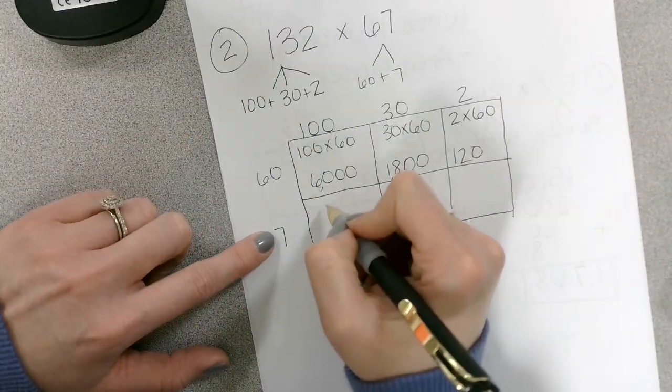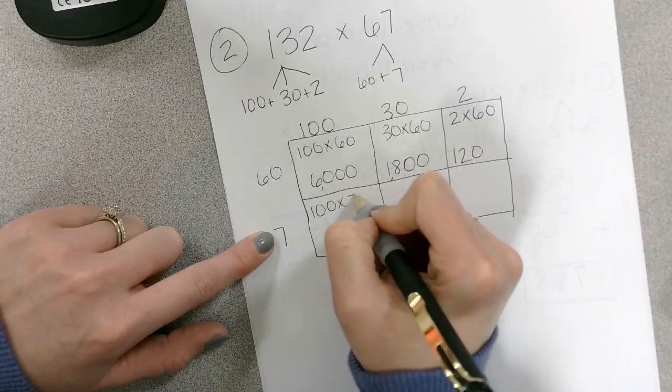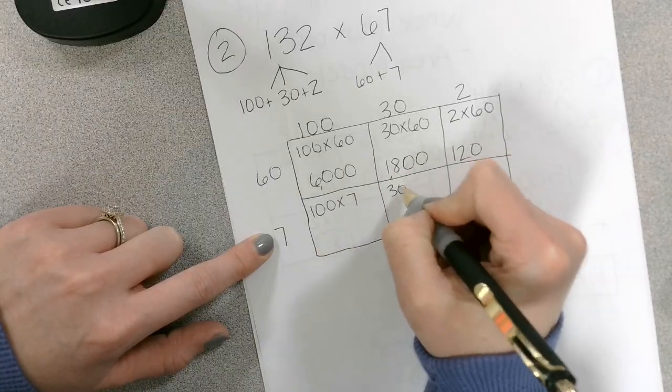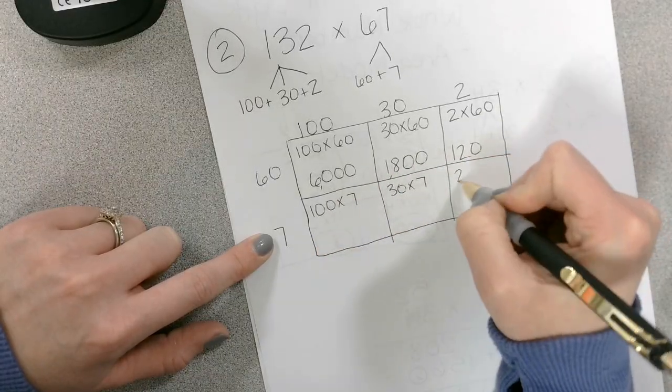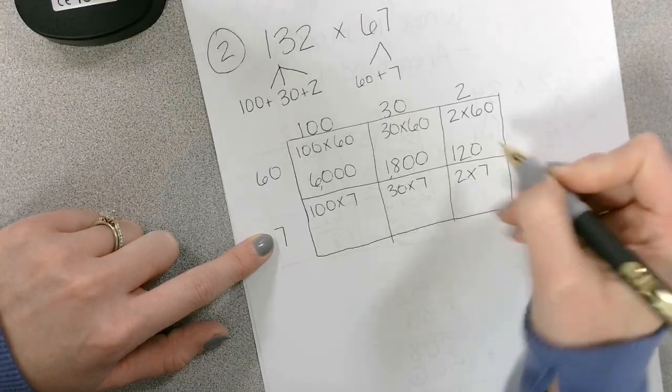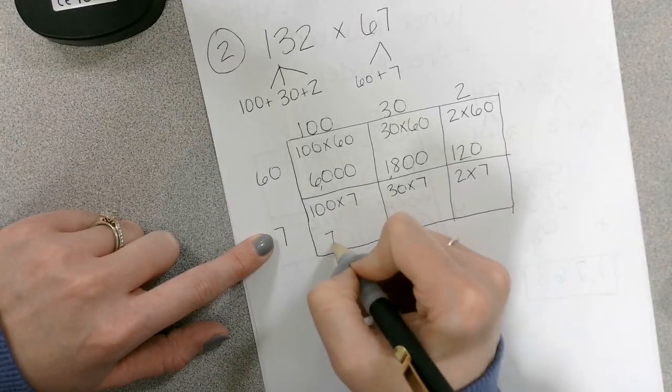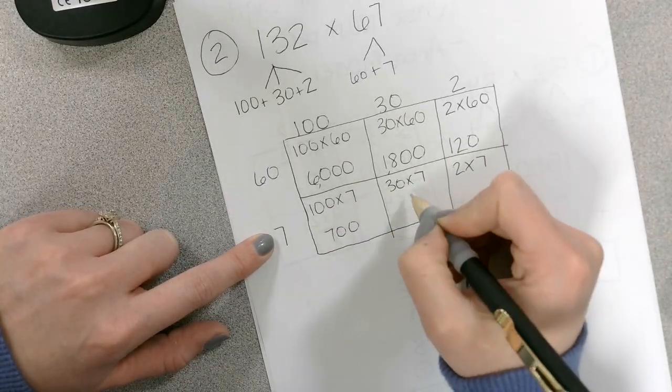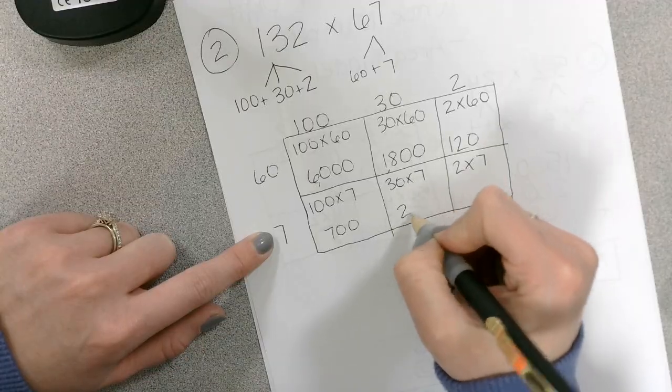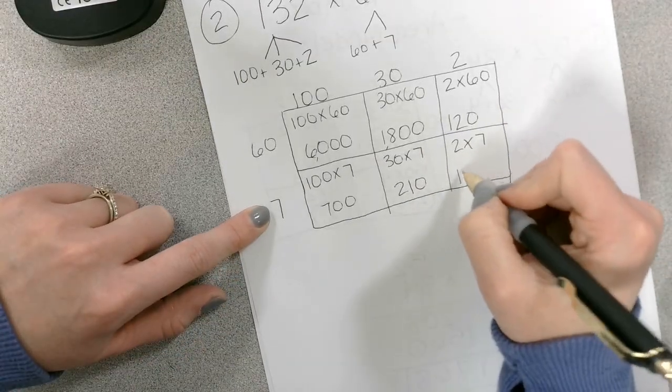And we have 100 times 7, 30 times 7, and 2 times 7. So 100 times 7 is 700. 30 times 7, 3 times 7 is 21, plus a zero is 210. And 2 times 7 is 14. Again, all of these are partial products.